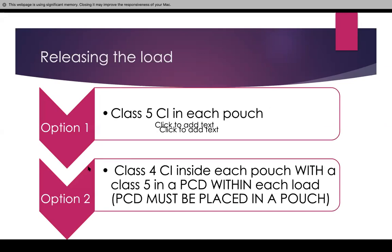Recording load numbers on patient progress notes creates much less hassle for us. For releasing the load, you can have a class 5 in each pouch or you can have a class 4 inside each pouch. I'm going to show you what a class 4 looks like, and then a class 5 in a PCD within each load. The PCD must be placed in a pouch too.